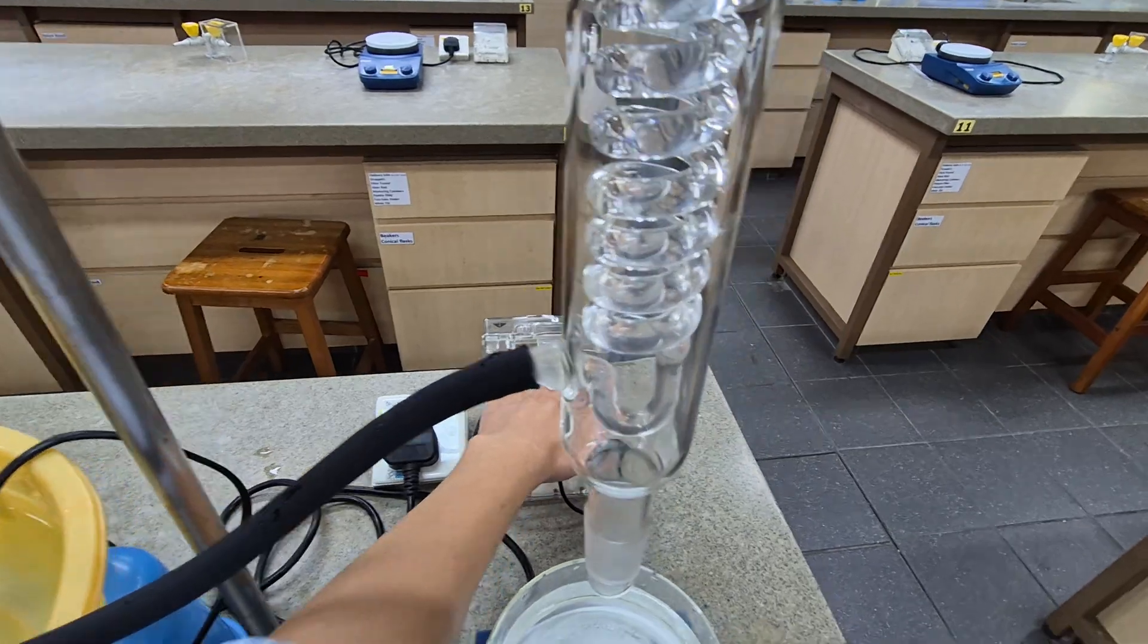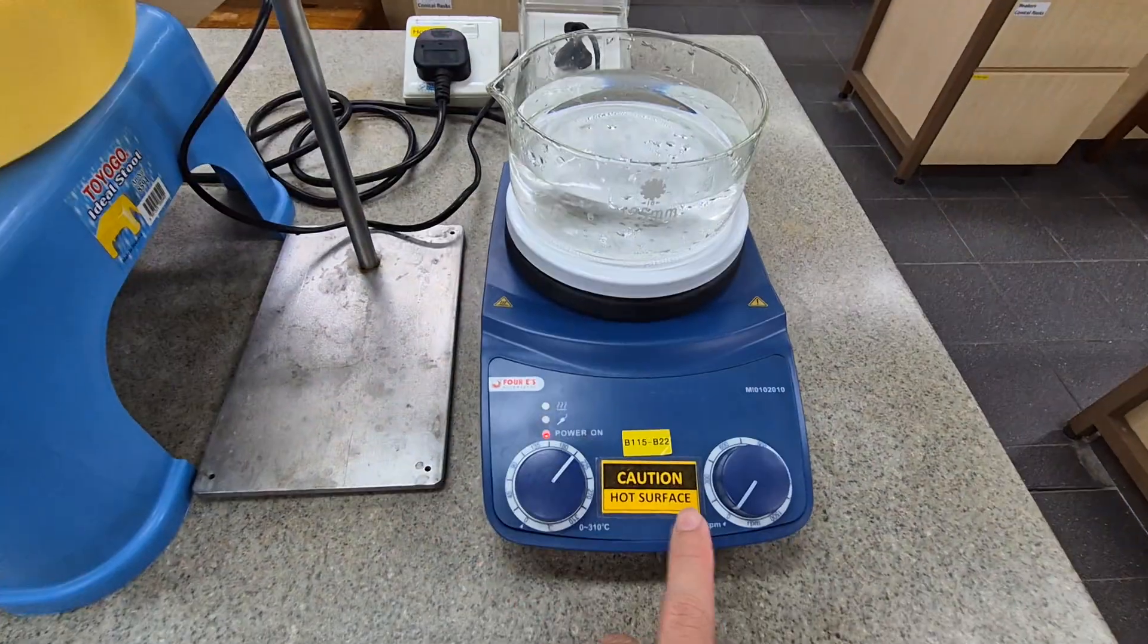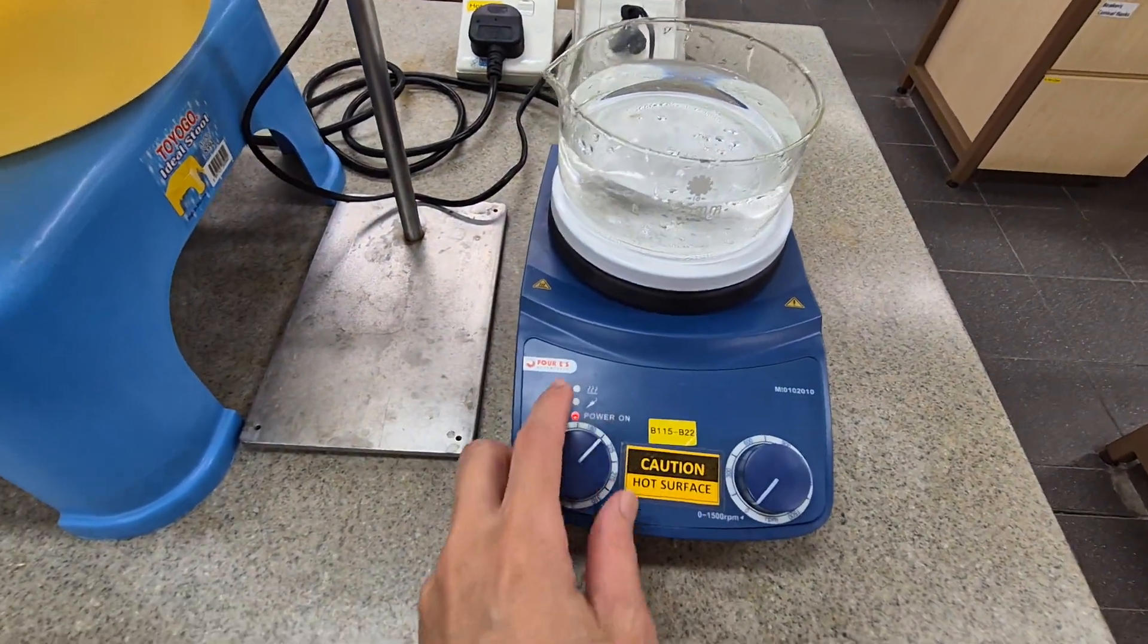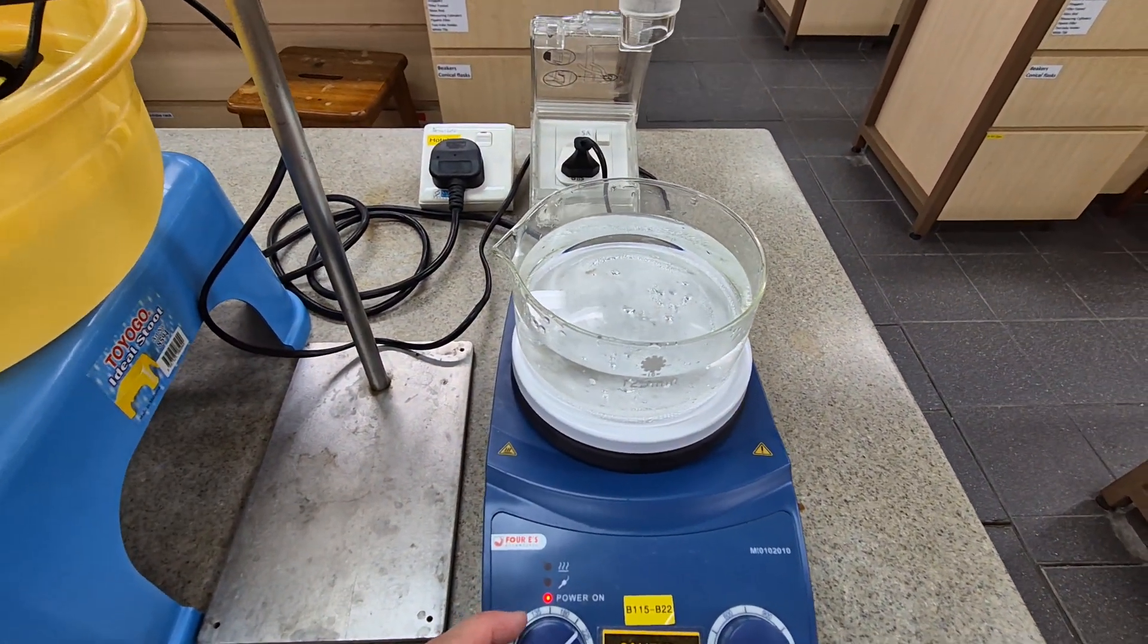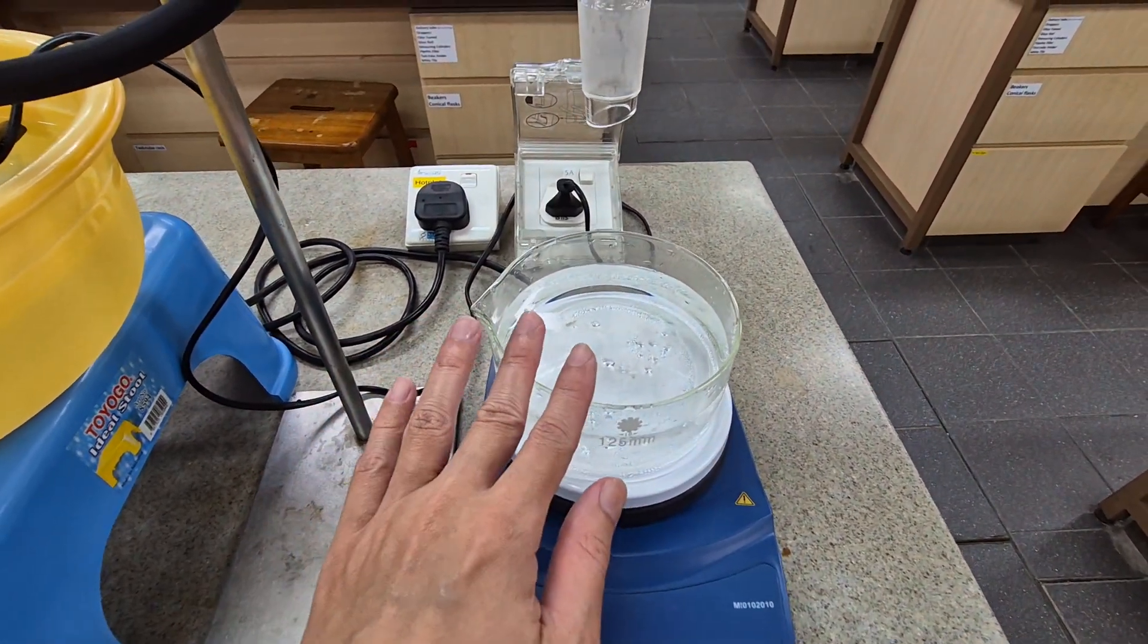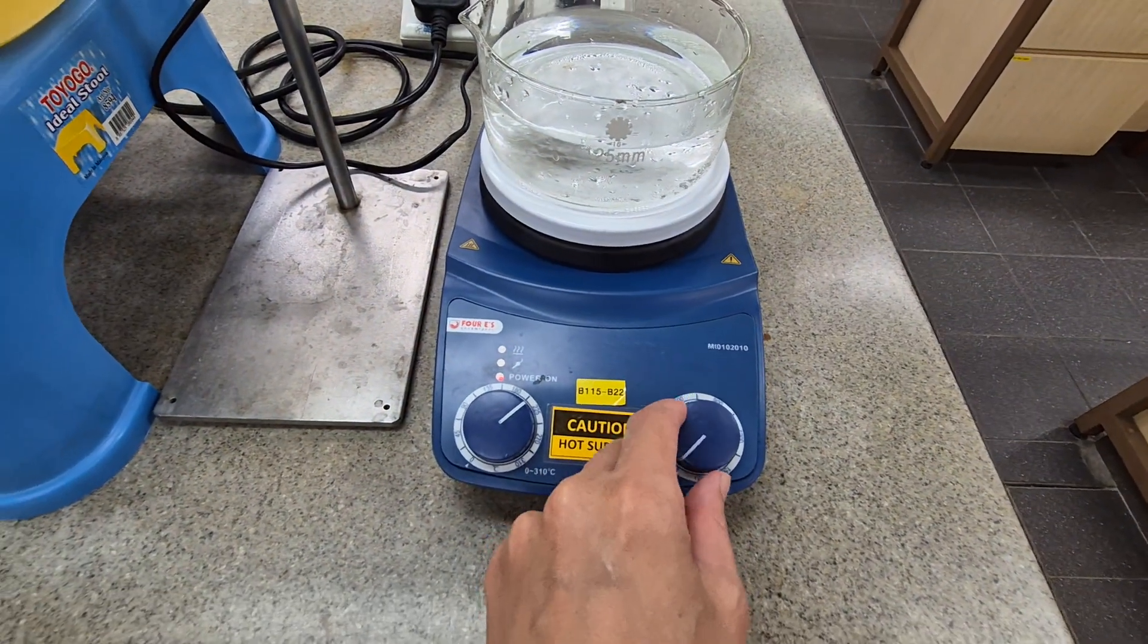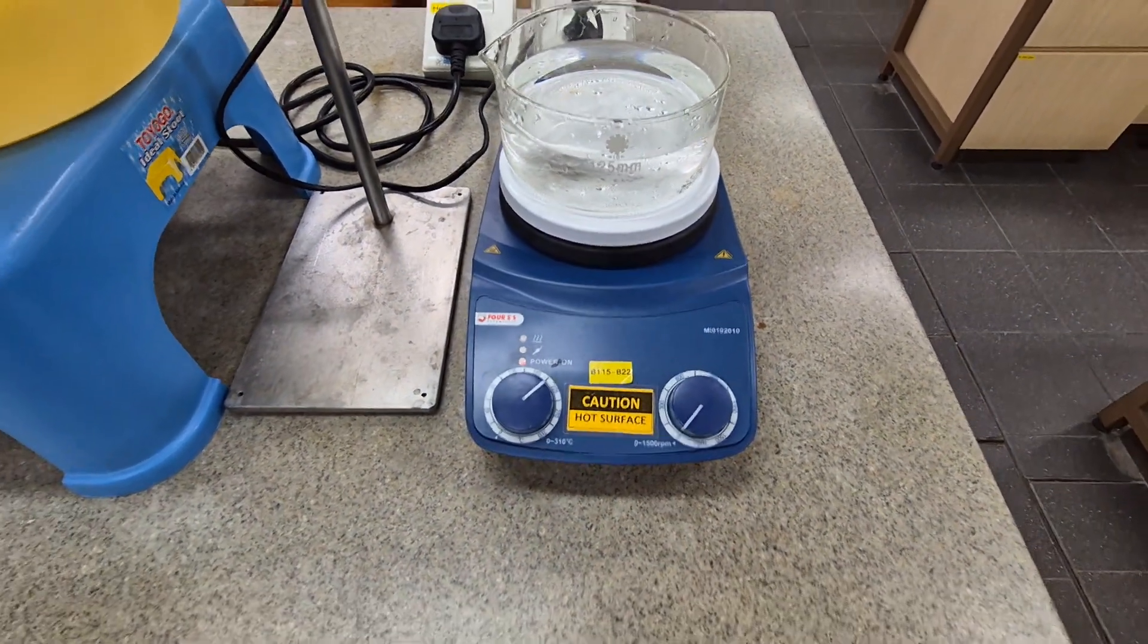This is the hot plate with the magnetic stirring function. This is the temperature control. You can see that I have already switched on the temperature because I want to heat up the water bath. This controls the magnetic field so it allows the magnetic stirring bar to stir and helps to stir the reaction mixture.